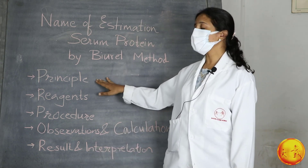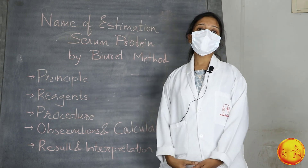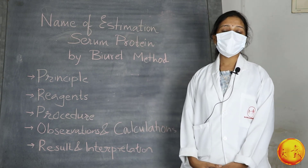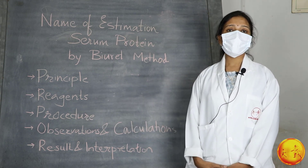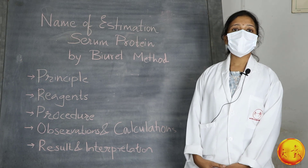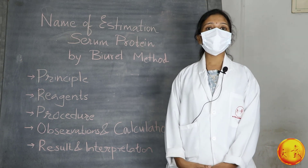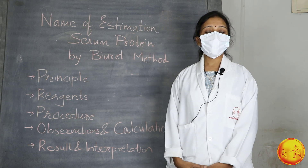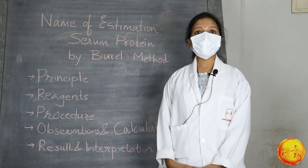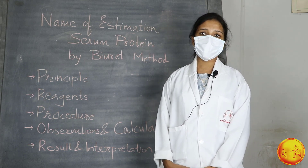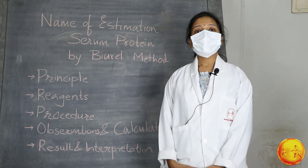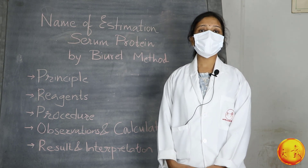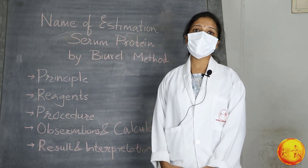First we will see the principle. When the serum is treated with Biuret reagent, the peptide bonds present in protein react with cupric ions to form a violet colored complex, and the absorbance is measured at 530 nanometers colorimetrically. The standard solution is treated similarly and the absorbances are compared.